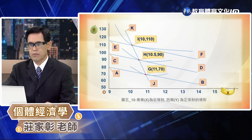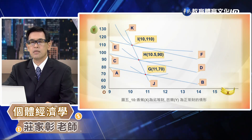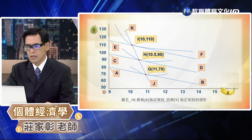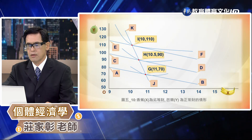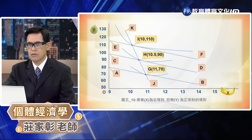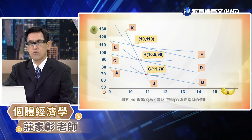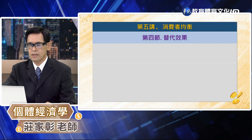最後一個是劣等品，劣等品所代表的意思是說所得水準提高但是消費數量減少，這條所得消費曲線呈現一條負斜率。在圖5-10當中，香蕉代表就是一種劣等商品，在預算限制線從 AB 增加到 CD 再增加到 EF 的時候，香蕉的消費數量從11減少到10.5再減少到10，所表現的就是所得水準提高消費數量減少。而巴勒仍然是一個正常品，消費數量隨著所得水準的提高而增加，所得消費線是一條負斜率。接下來第四節替代效果。